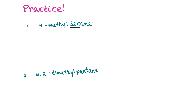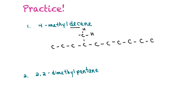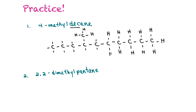Now we'll practice drawing branched alkanes. First, draw 4-methyldecane: decane is ten carbons, so we draw them out one through ten. On the fourth carbon there is a methyl group. We fill in the empty spaces — note that carbon four has a group coming off it, so it's CH rather than CH2. Then we put in all the hydrogens.